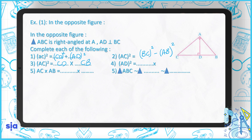Question four: AD² is what by the Euclidean theorem? AD² = DC × DB.